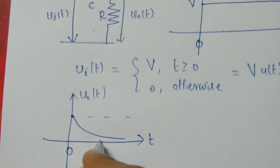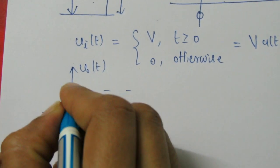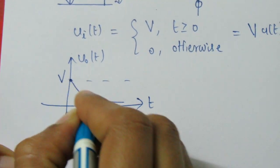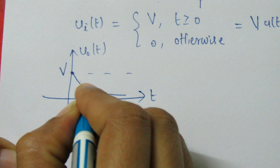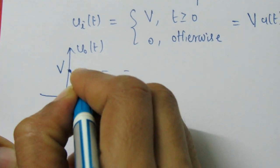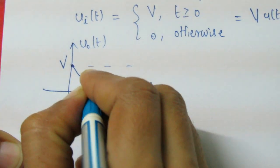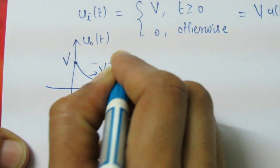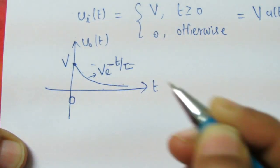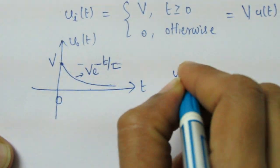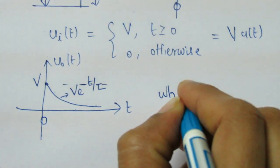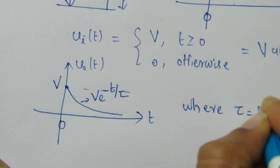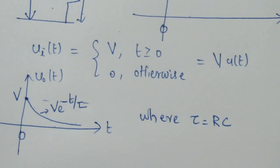This is the output signal we will get. We can write this signal as: from V it is exponentially decreasing, so this can be written as V into e to the power minus t by tau, where tau is equal to R into C.